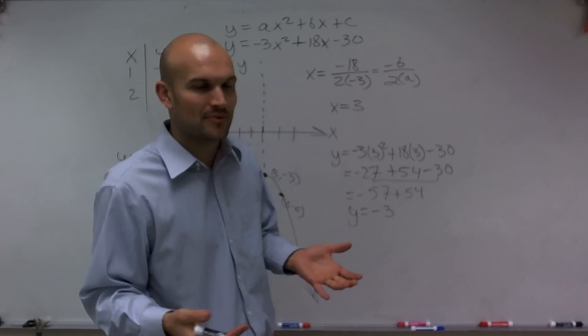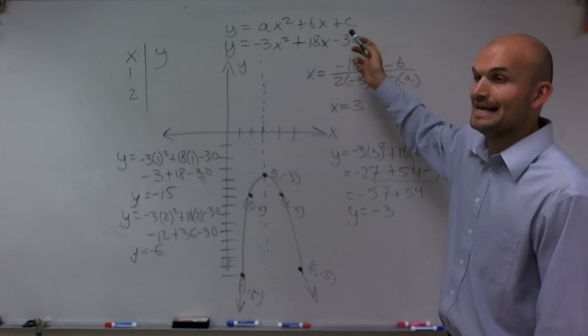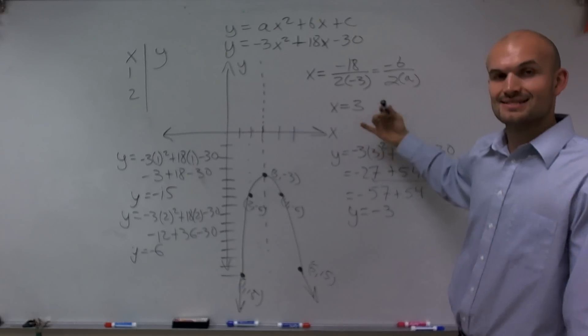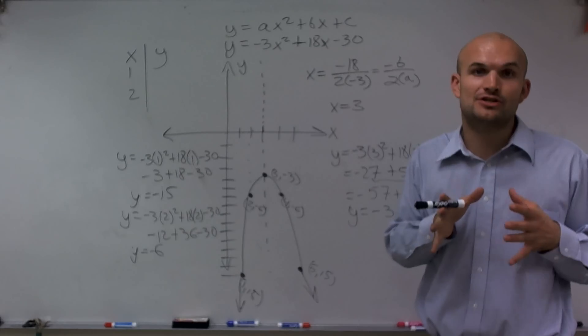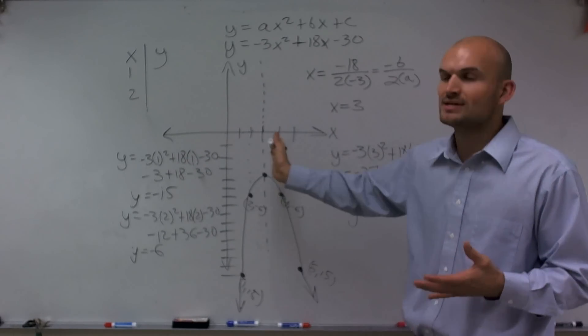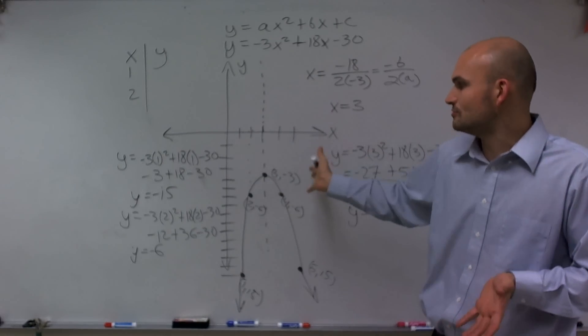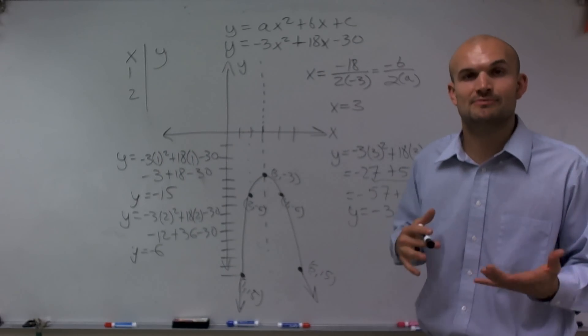So ladies and gentlemen, just to recap, when graphing parabolas, the first thing you want to do is determine your a, b, and c, find the axis of symmetry, then plug that point in to find your vertex. Once you know your vertex and axis of symmetry, choose points to the left and right of your graph to be able to plot the rest of your points using the symmetry.